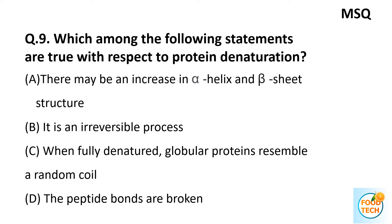Question 9: Which among the following statements are true with respect to protein denaturation? A. There may be increase in alpha helix and beta sheet structure, B. It is an irreversible process, C. When fully denatured, a globular protein resembles a random coil, D. The peptide bonds are broken. It is a multi-select question and the answer is A and C.